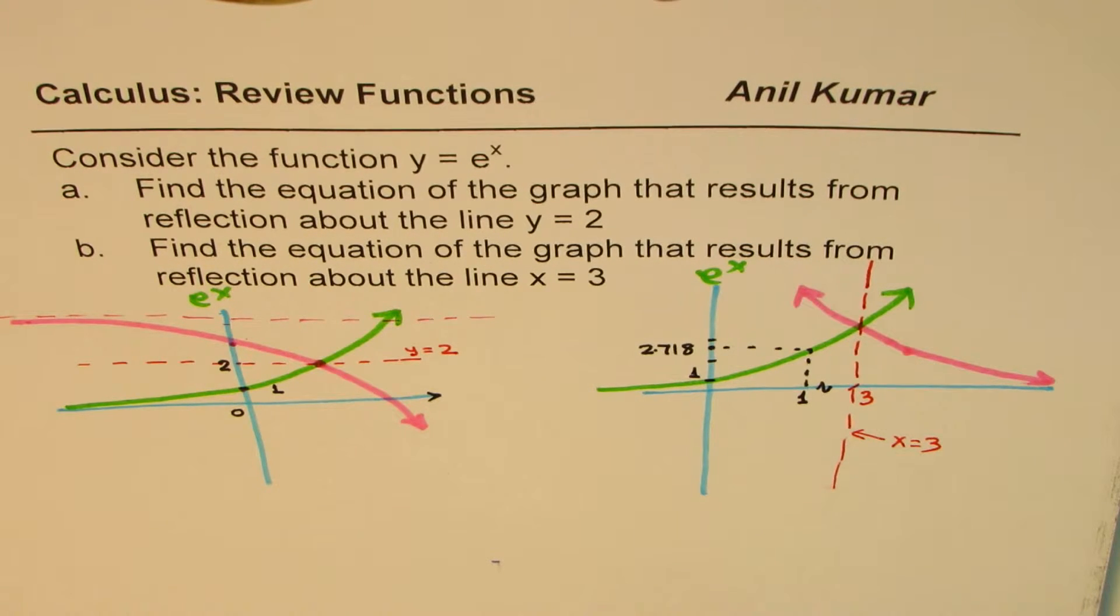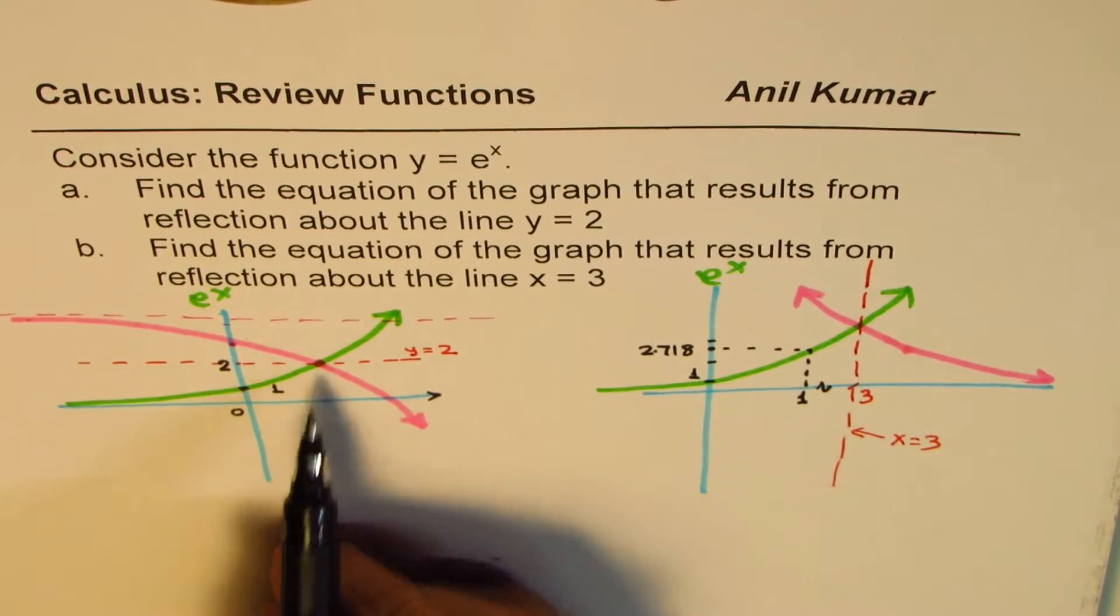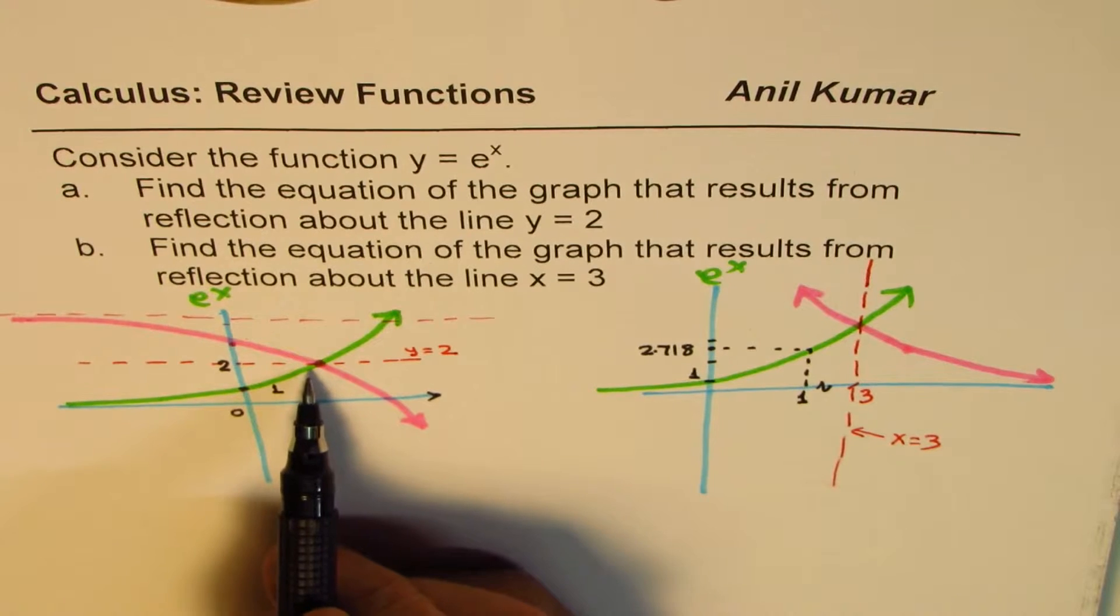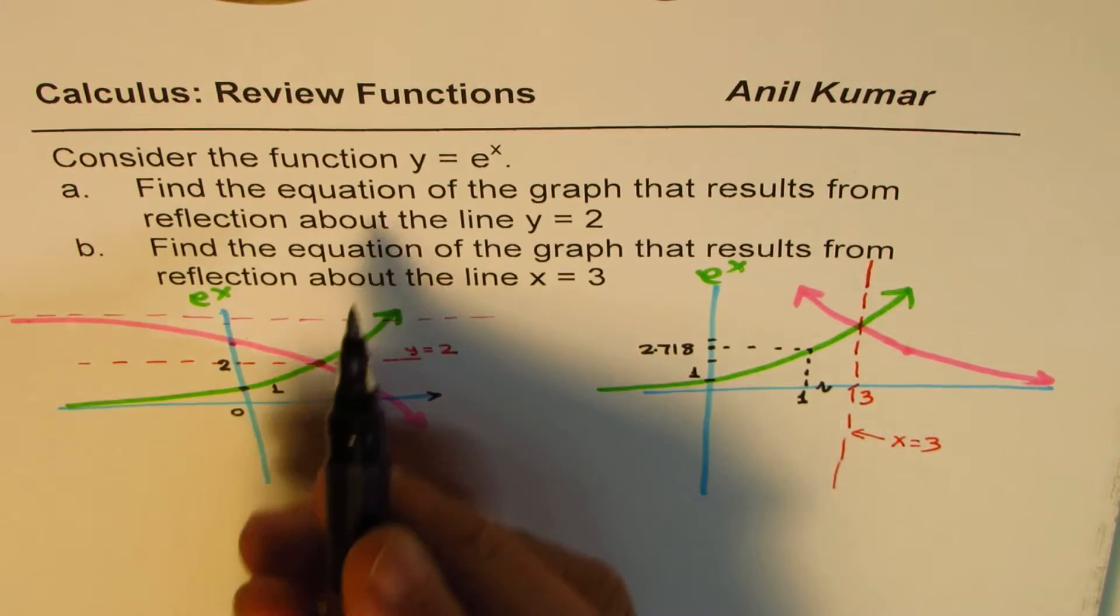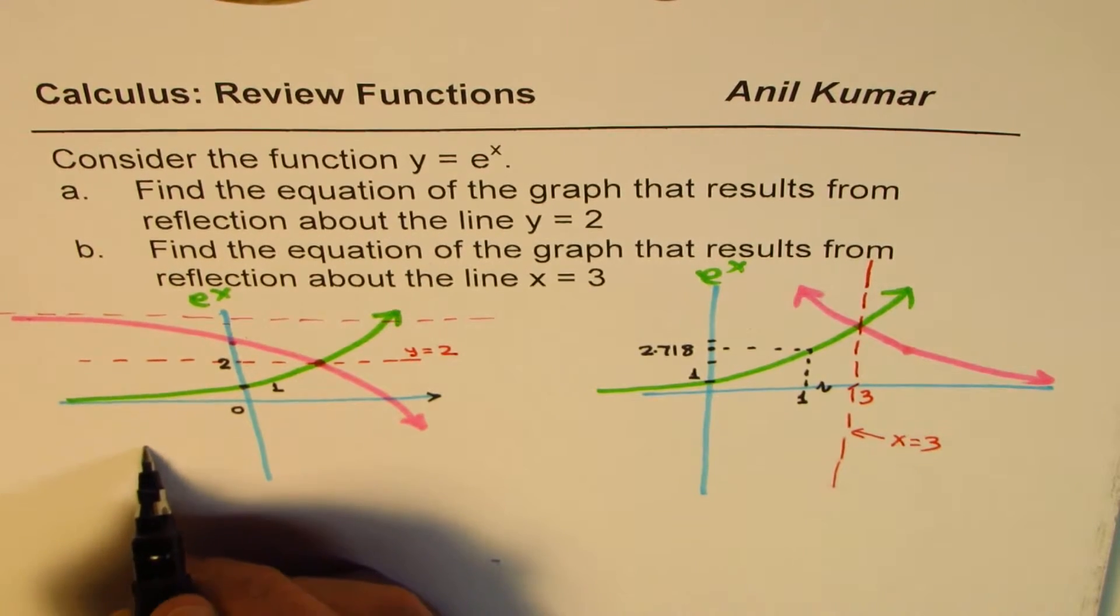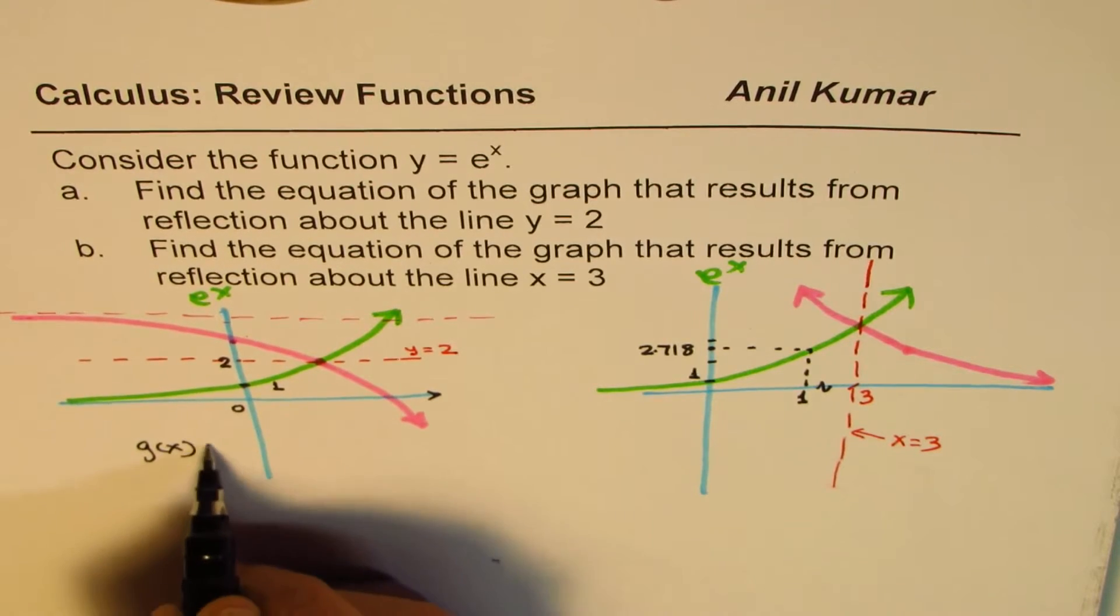Now the question is, write down the equation of both these reflected graphs. So let's write down the first one. Now here what you see is that everything is vertical. One, it is moving vertical two units, and then it's getting reflected. And whenever we write equations, we have to do multiplication kind of things first.